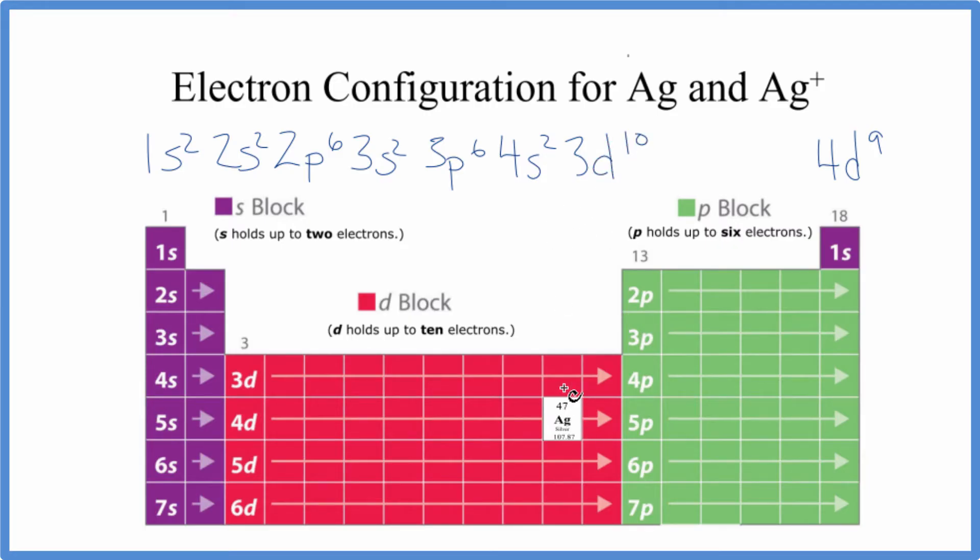Remember, silver has atomic number 47, so 47 protons, 47 electrons. All these numbers are going to need to add up to 47. So I have 3d, then 4p⁶, 5s², and then 4d⁹, which is where we wanted to end up.